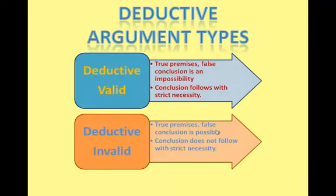In deductive arguments, there are two possibilities: a structure may be valid or invalid. When a structure is valid, there are true premises and a false conclusion is an impossibility — conclusions follow with strict necessity. However, when the structure is faulty or invalid, true premises and a false conclusion is possible, and the conclusion does not follow with strict necessity.